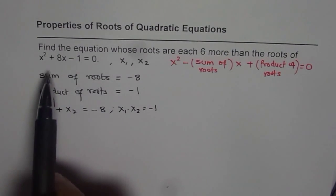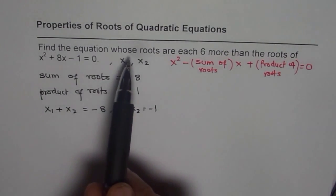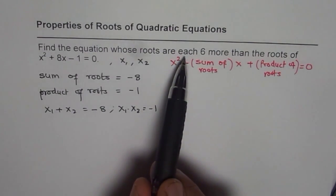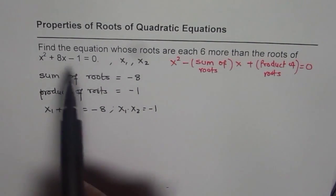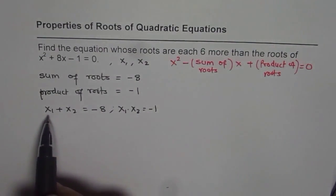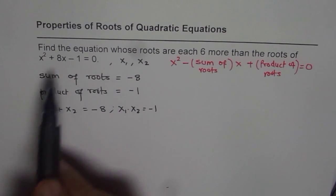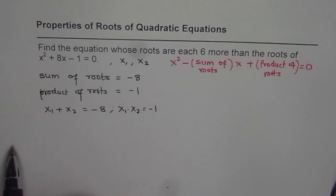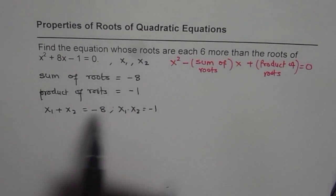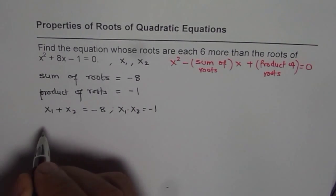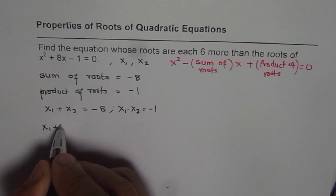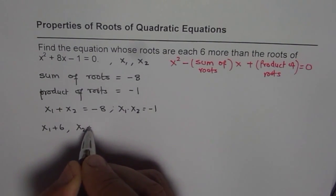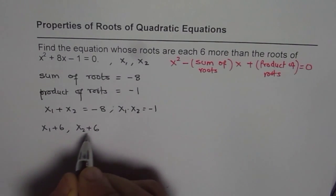Now the question is, find the equation whose roots are each 6 more than the roots of this equation. So if x₁ and x₂ are the roots of the given equation, then the equation which we need to find, its roots are 6 more. That means x₁ + 6 is the first root and x₂ + 6 is the other root.